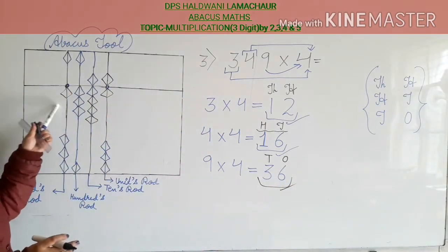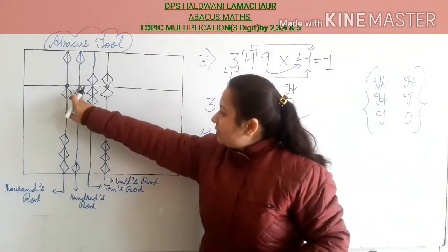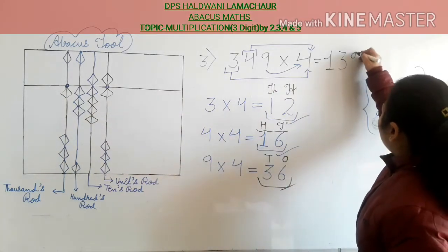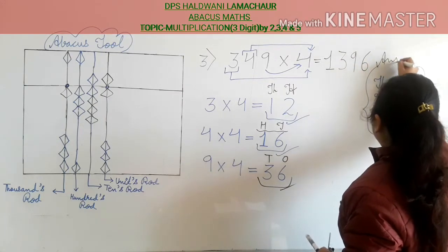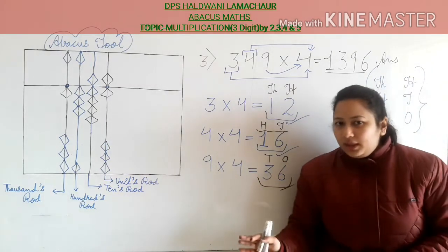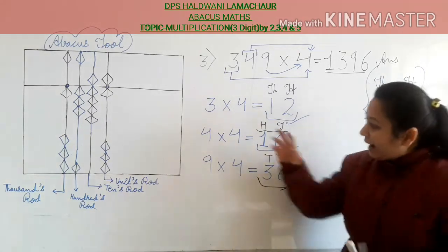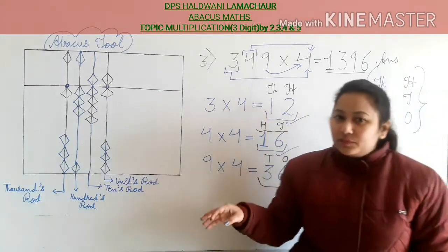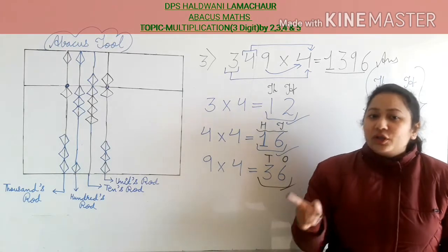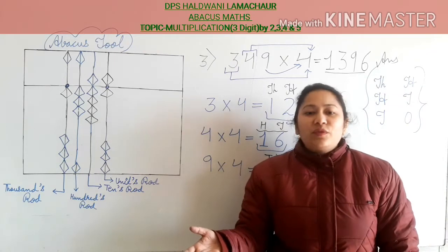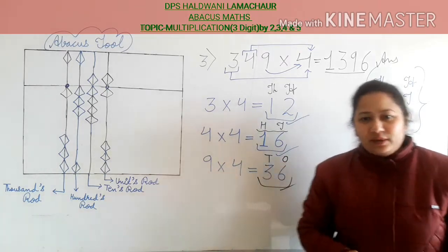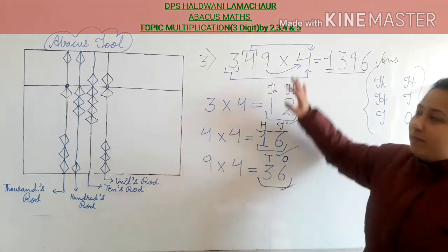Now count: thousands rod has 1, hundreds rod — count the beads: 9, tens rod has 5, 6, 7, 8, 9, and units rod has 5, 6. So your answer is 1396. Students, in these sums you can see there is no lack of beads — whenever you are adding, the bead is there. But in further sums we may get lack of beads, so please watch the video till the end. You will need to apply the small friends or big friends formulas to solve those sums. Let's move to the next sum: 3-digit multiplication by 5.